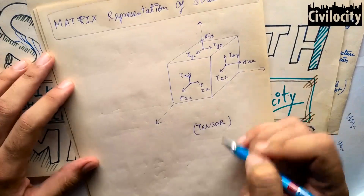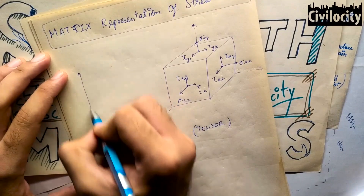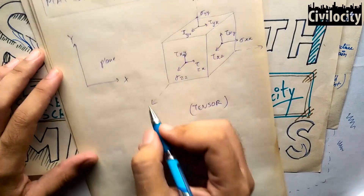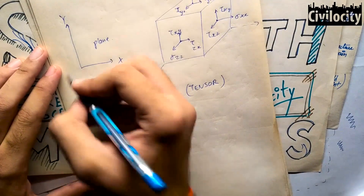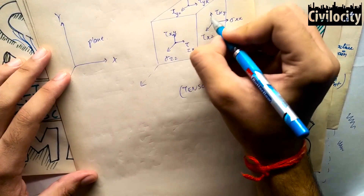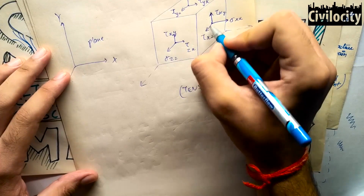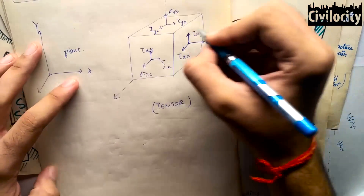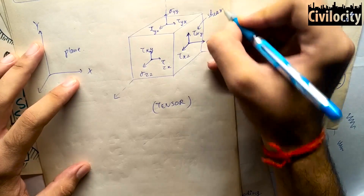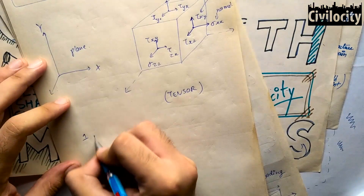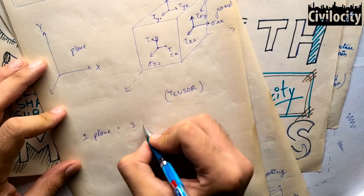Stress and strain are special quantities, and when we group them, we call them stress tensors or strain tensors. The stress tensor maps planes to directions. In a 3D loaded body, there are three perpendicular planes, and in each plane, three stresses are produced: one normal to the plane, which is normal stress, and two along the plane, which are shear stresses.